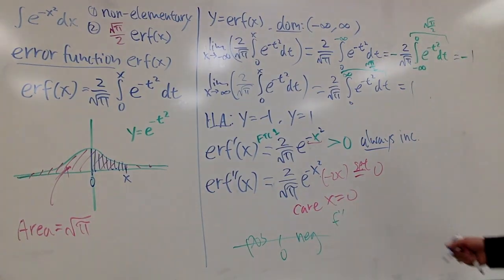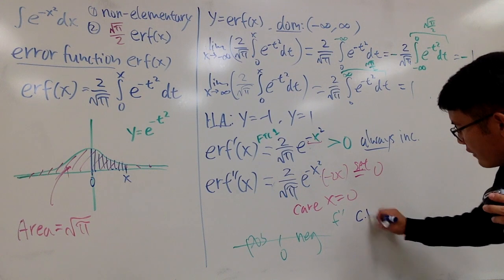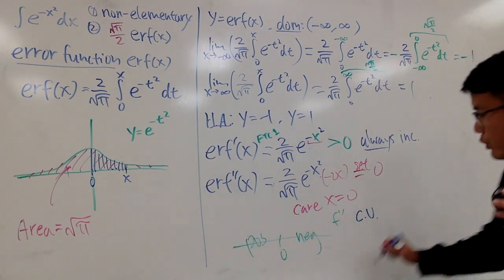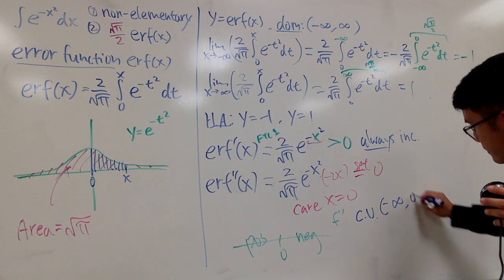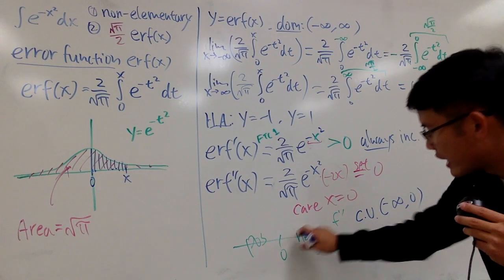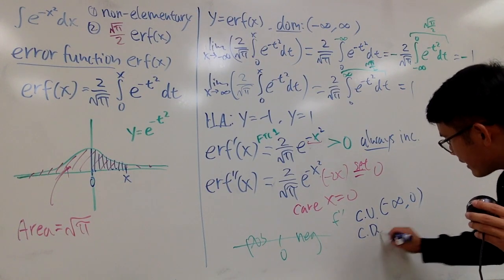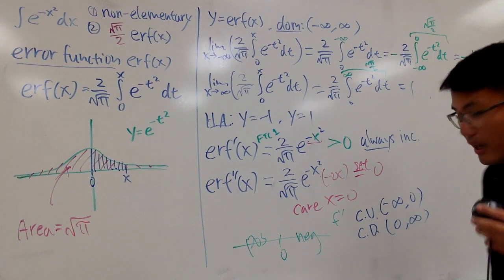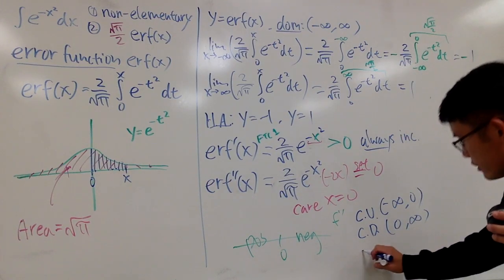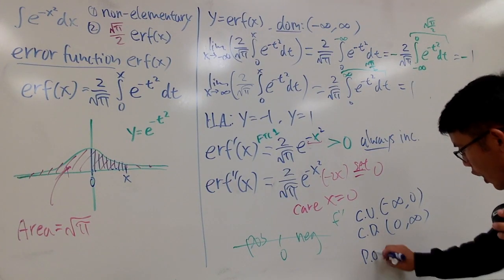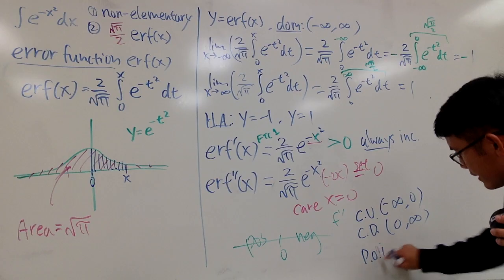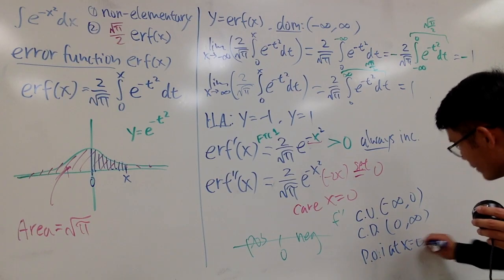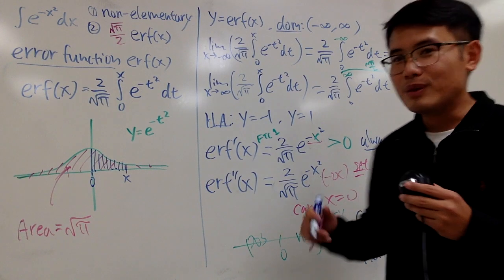So the second derivative tells us: concave up from negative infinity to zero, and concave down from zero to positive infinity. We do have a point of inflection at x equals zero.